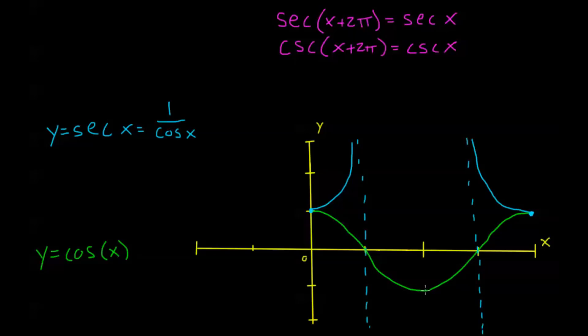And then where cosine is negative 1, my secant is negative 1. And as cosine gets closer to 0, secant gets further from 0.